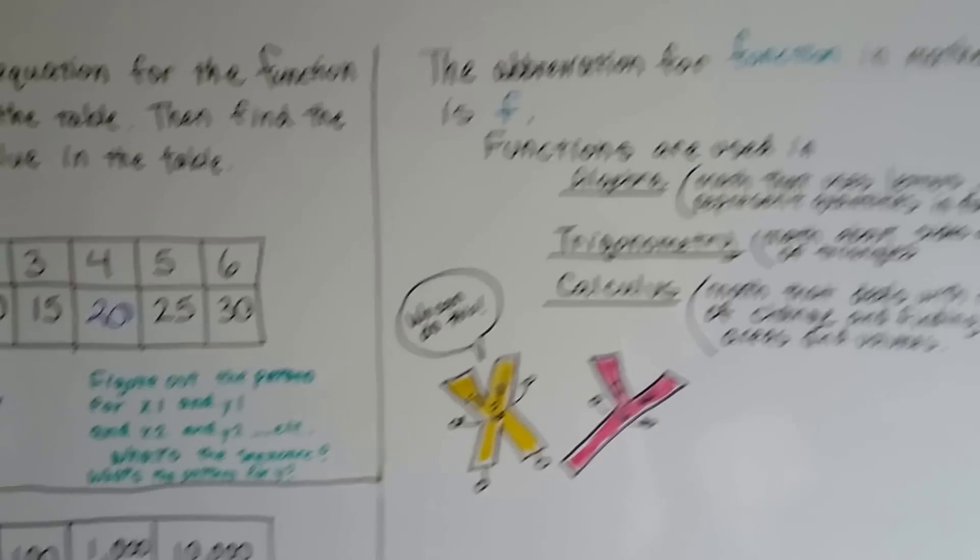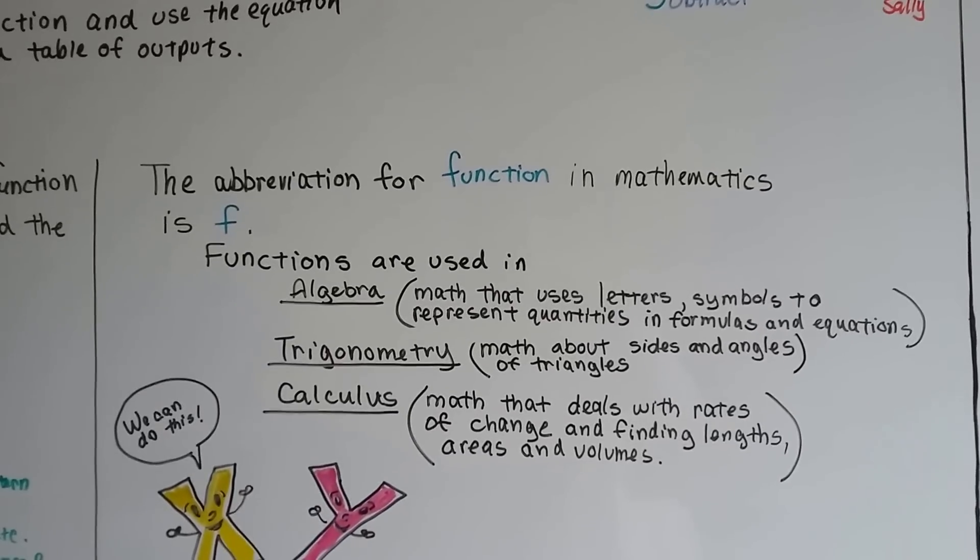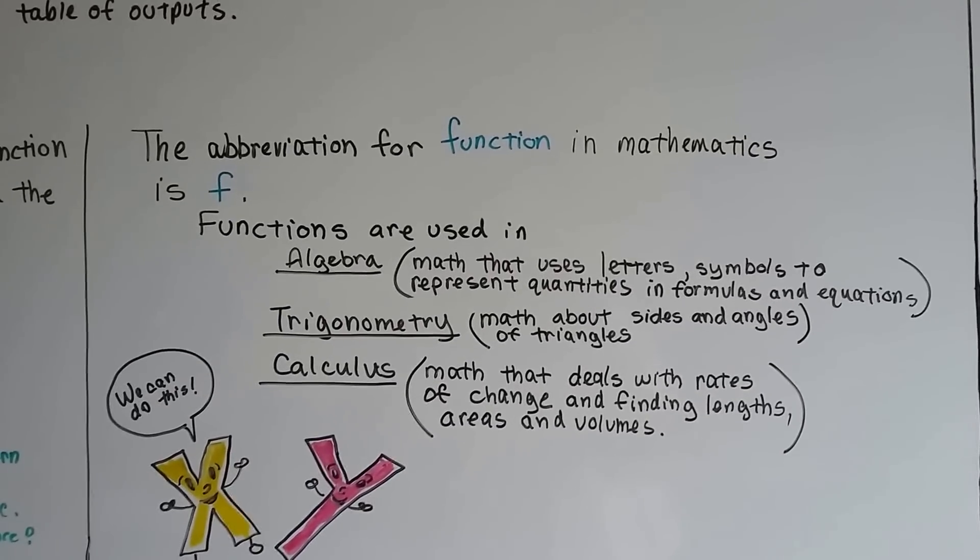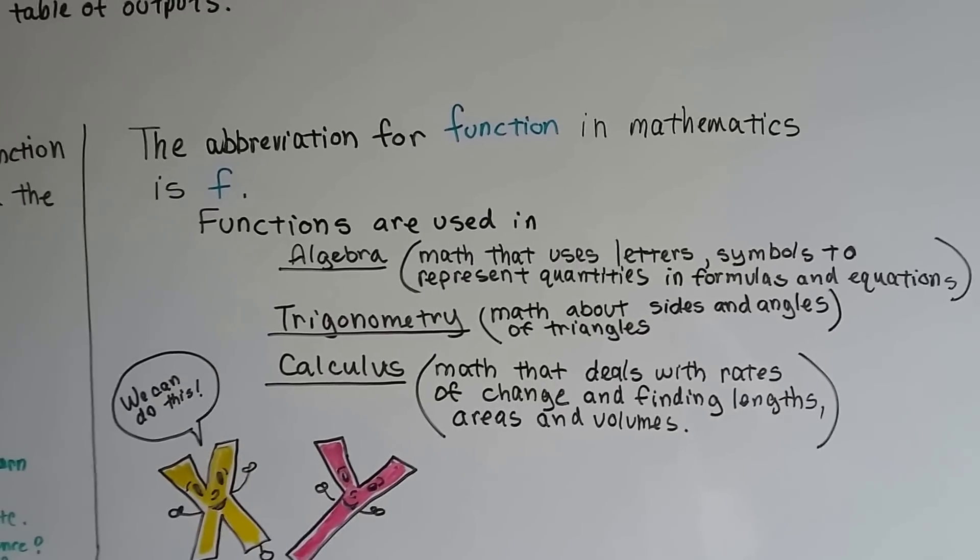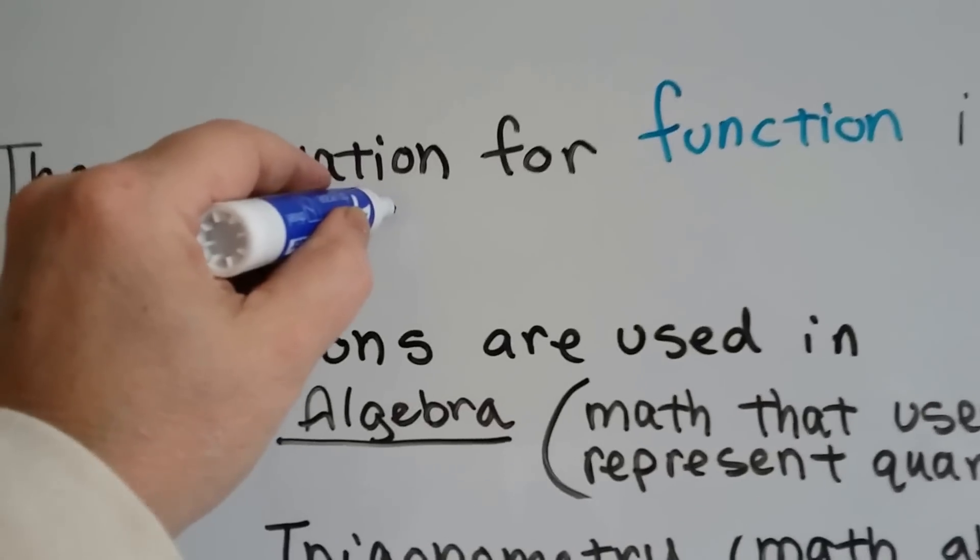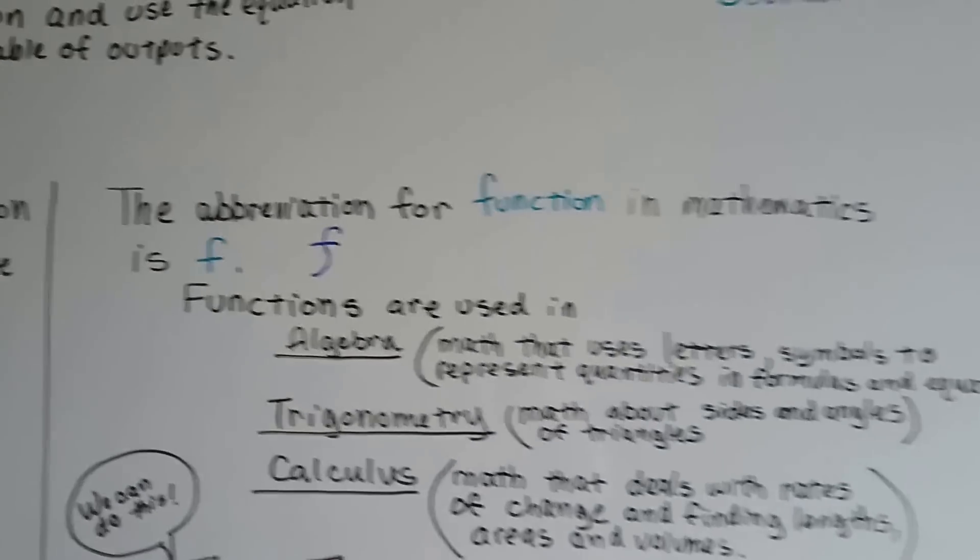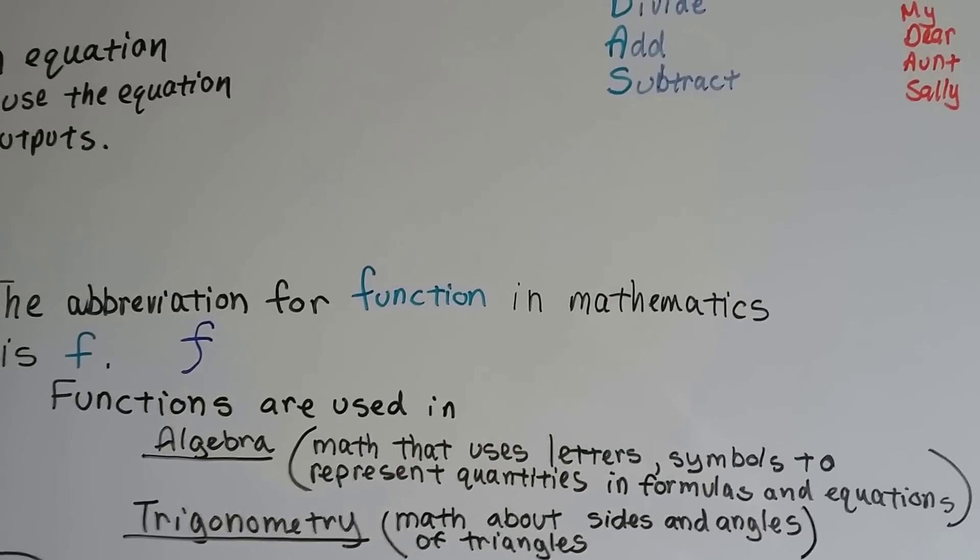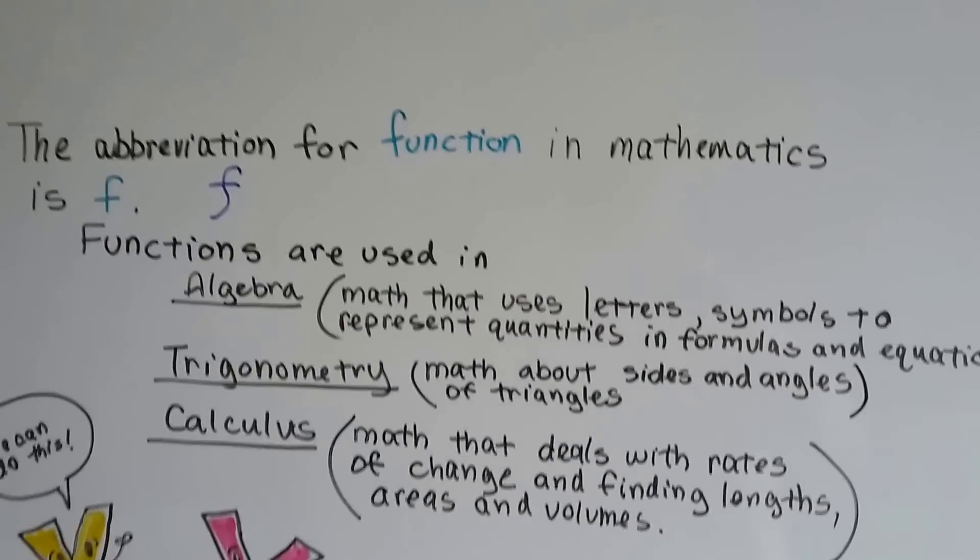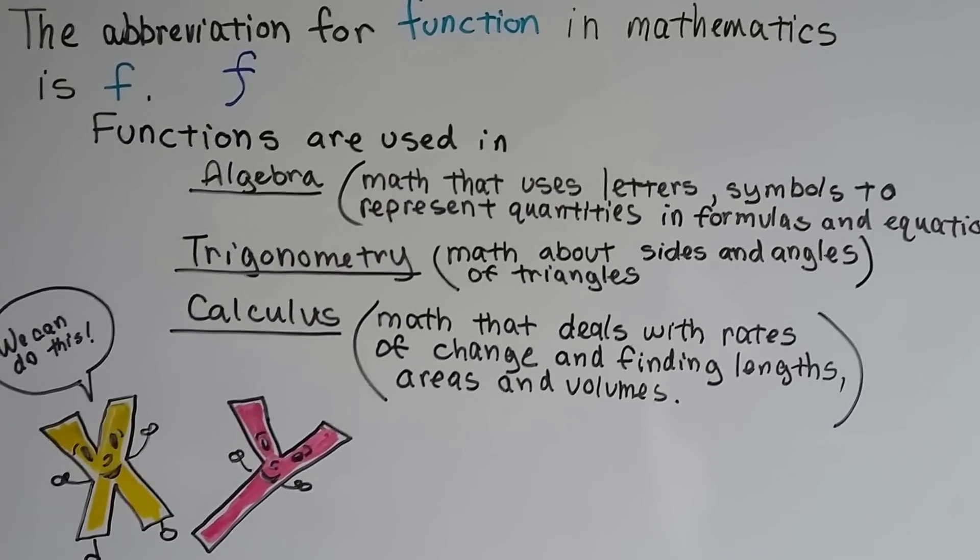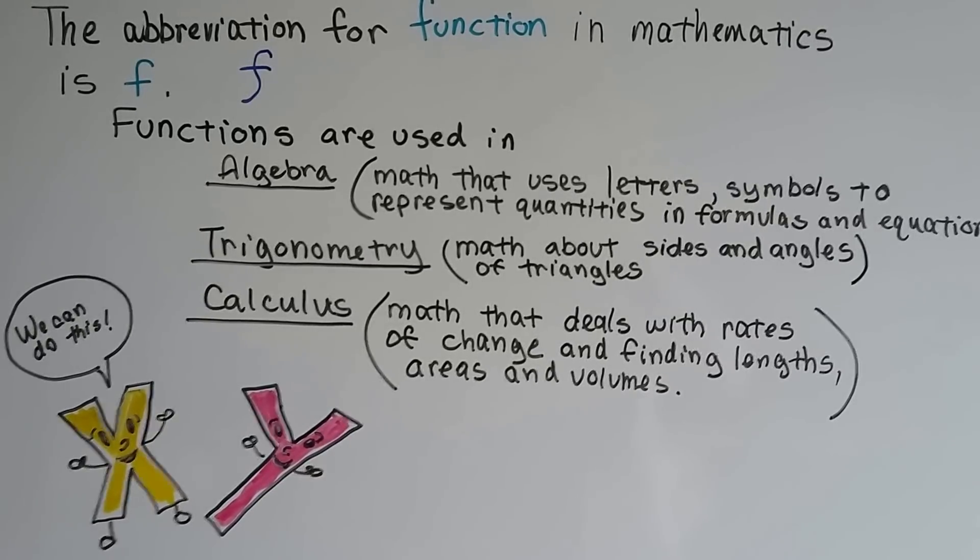So the abbreviation for function in mathematics is the letter F. And yes, F is a letter in the alphabet that could be used as a variable to take the place of an unknown number. Yes, that is true. But generally, when you see it in the math books, it's written kind of fancy like that. So functions are used in algebra, and that's math that uses letters, symbols, to represent quantities and formulas and equations. And it's used in trigonometry. That's math about sides and angles of triangles. And it's used in calculus. That's math that deals with rates of change and finding lengths and areas and volumes.